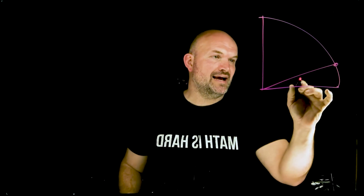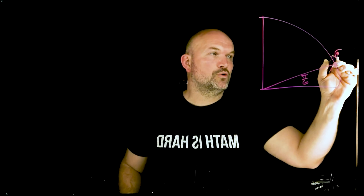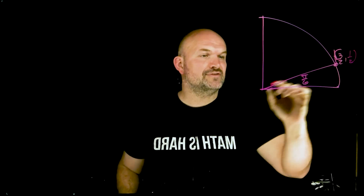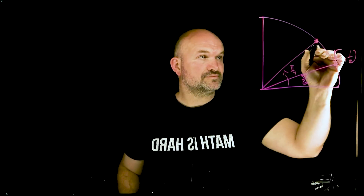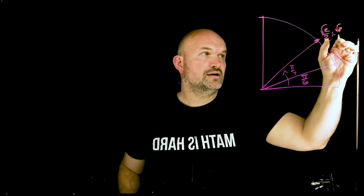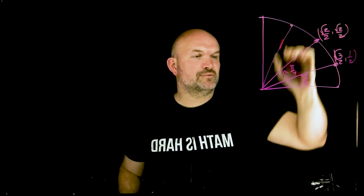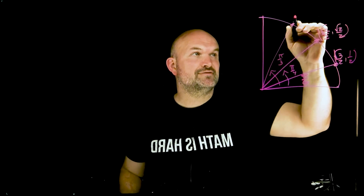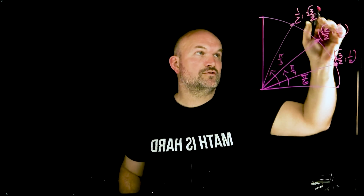The first angle is π/6, which has coordinate point (√3/2, 1/2). The next angle is π/4, with coordinate points (√2/2, √2/2). And the last angle we'll be working with is π/3, which has coordinate points (1/2, √3/2).